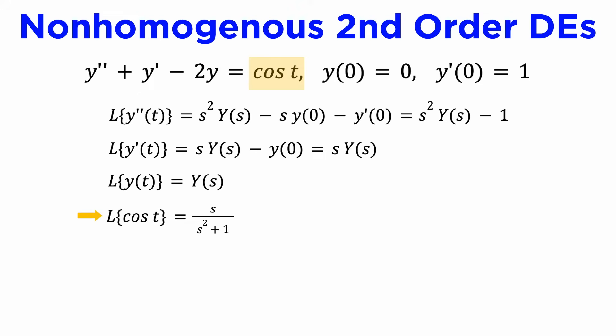On the other side, the table gives the transform of cosine of t as s over the quantity s squared plus 1. We can now write out our transformed equation, s squared times capital Y plus s times capital Y minus 2 capital Y minus 1 equals s over s squared plus 1.